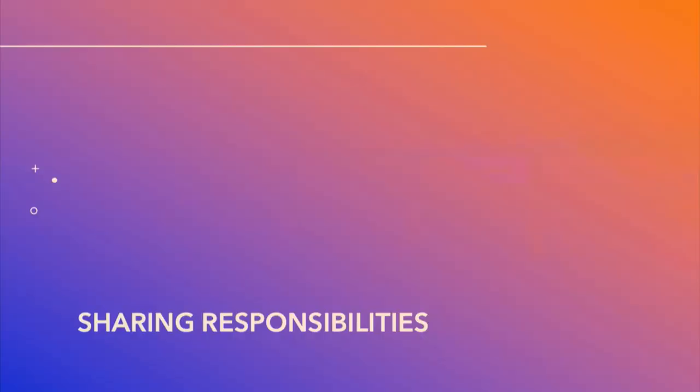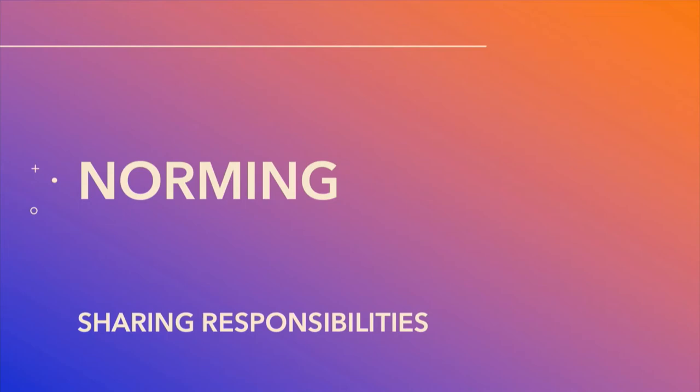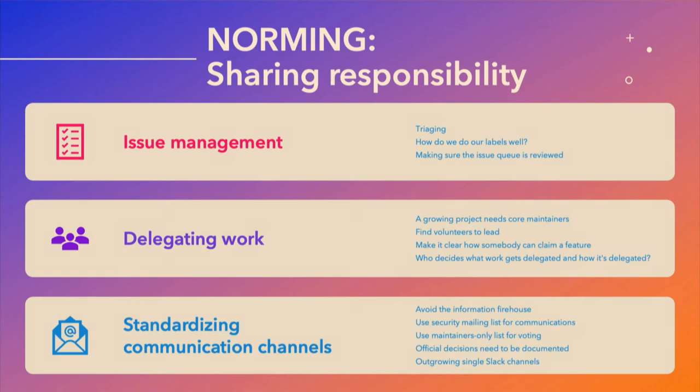Now we move on to the third phase: norming. In the norming phase, the group dynamic really changes to say, 'Okay, now we know how to work together, now we know how to solve problems.' How do we codify how things are done in this project with the purpose of making it easy for us to continue on?